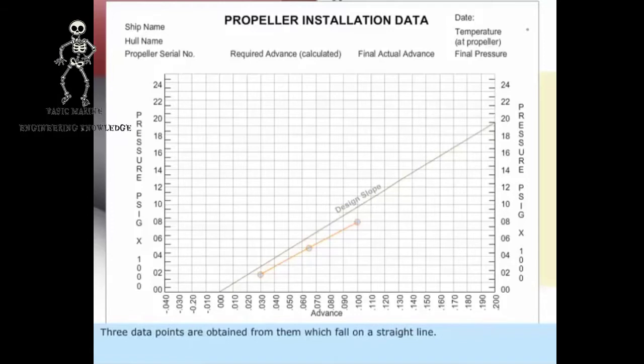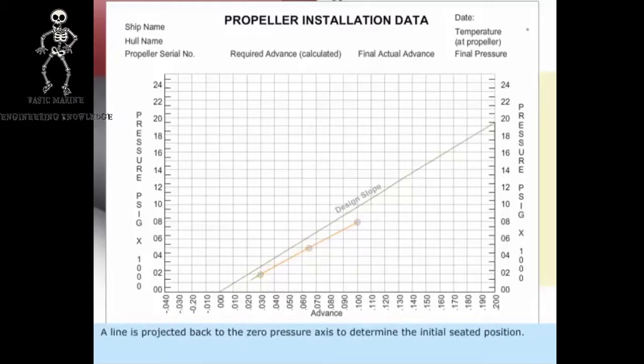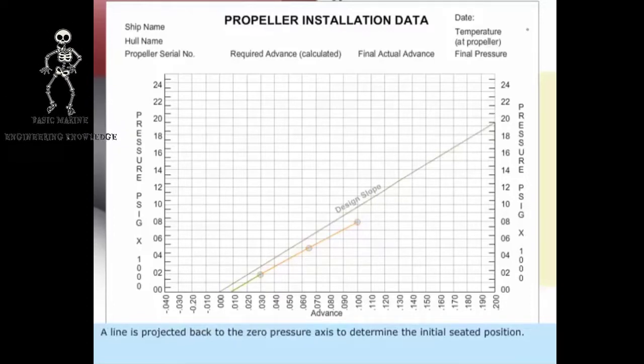Three data points are obtained which fall on a straight line. A line is projected back to the zero pressure axis to determine the initial seated position.